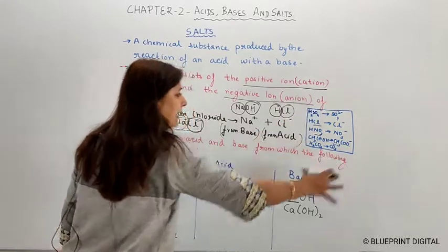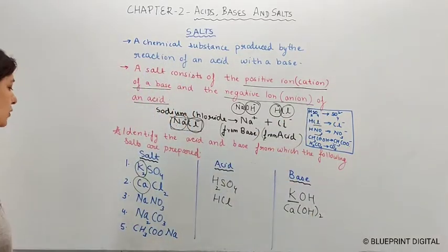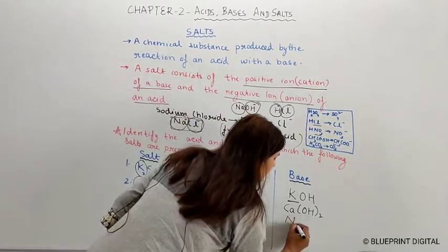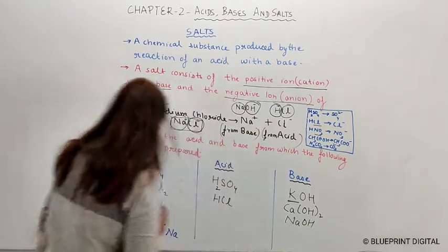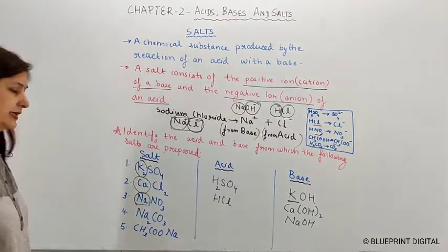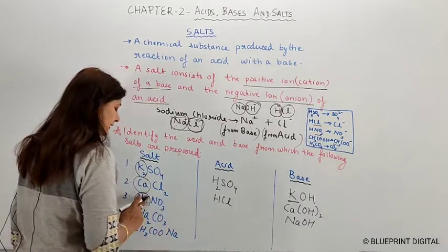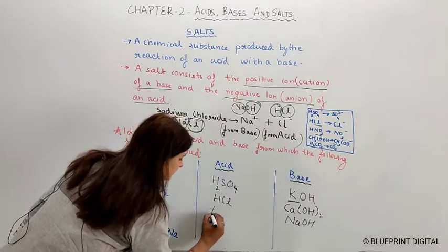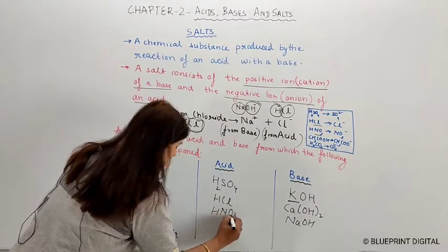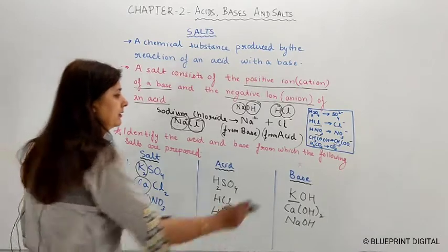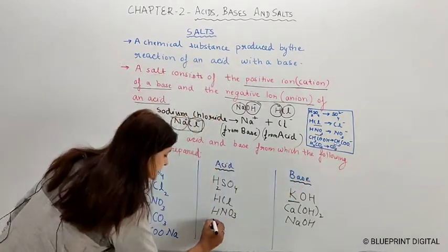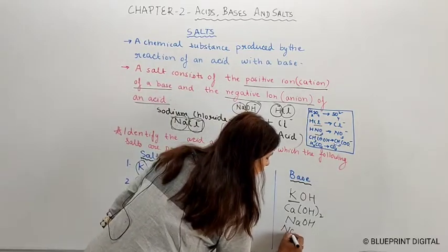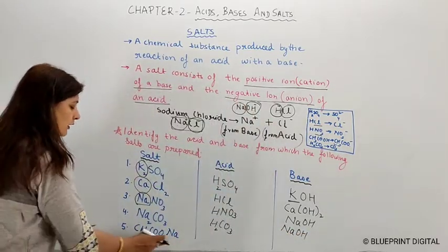Using the common anions I have told you, it is easy to identify these. Sodium nitrate: the base is NaOH (sodium hydroxide), the metal part gives us the cation, and the anion is nitrate, so the acid is nitric acid, HNO₃. Then sodium carbonate: the anion is carbonate, so the acid is carbonic acid, H₂CO₃, and the base is again sodium hydroxide.